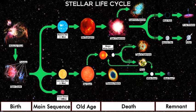Stellar evolution is the process by which a star changes over the course of time. Depending on the mass of the star, its lifetime can range from a few million years for the most massive to trillions of years for the least massive, which is considerably longer than the age of the universe. The table shows the lifetimes of stars as a function of their masses.